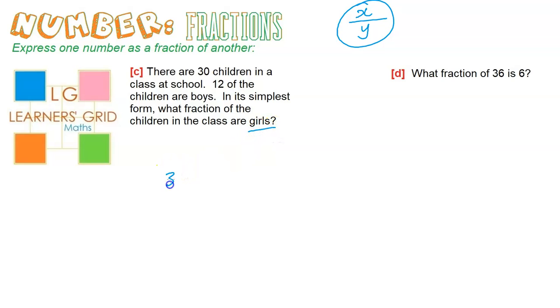So we've got 30 children, 12 are boys, but we have to give the fraction of the number of girls. So 30 minus 12, that's going to be 18. So there are 18 girls.